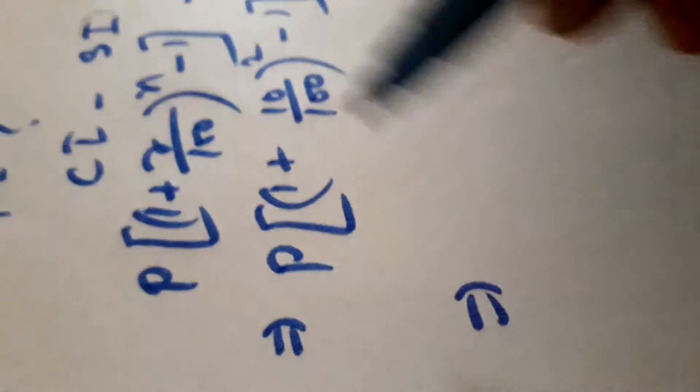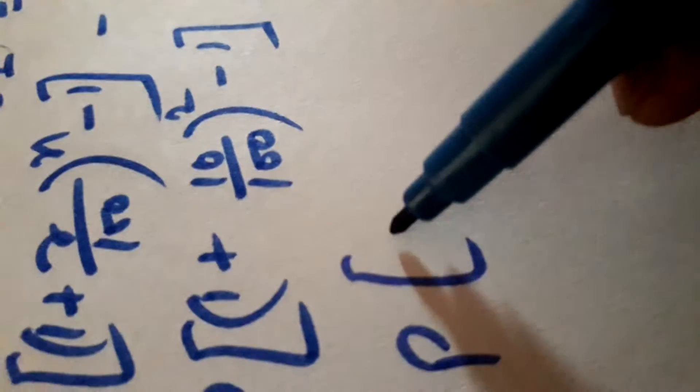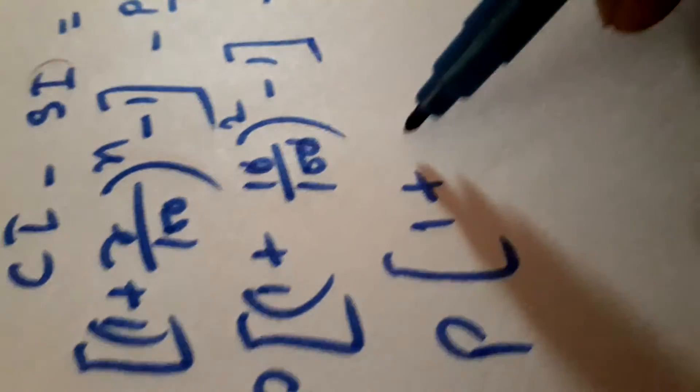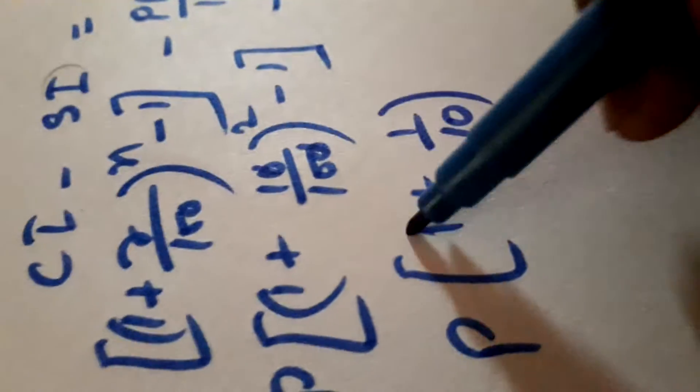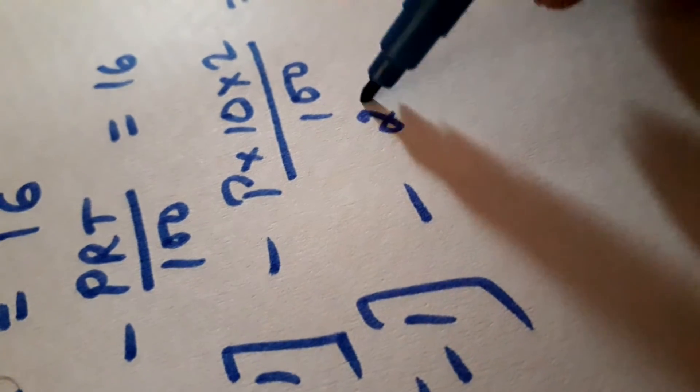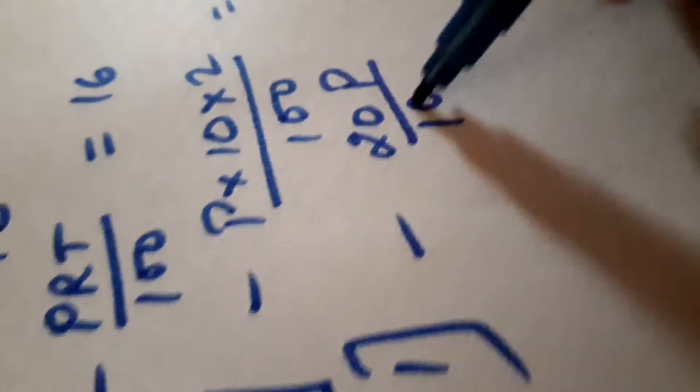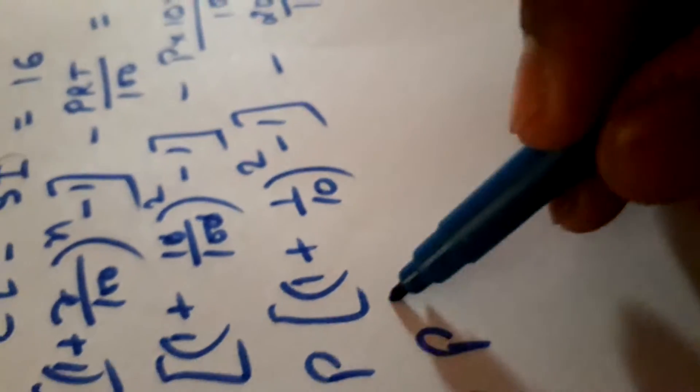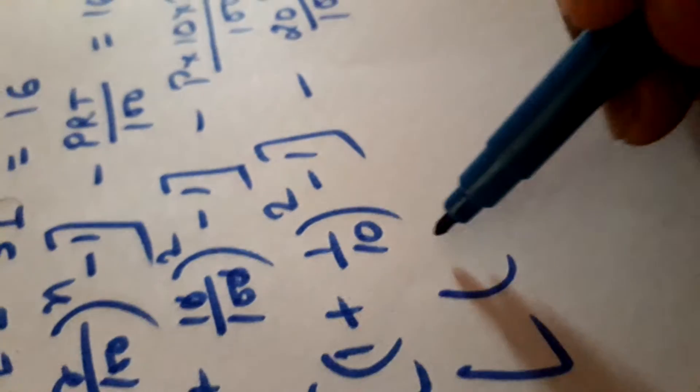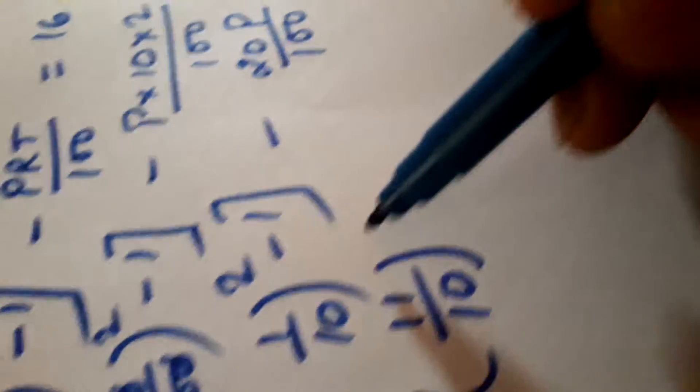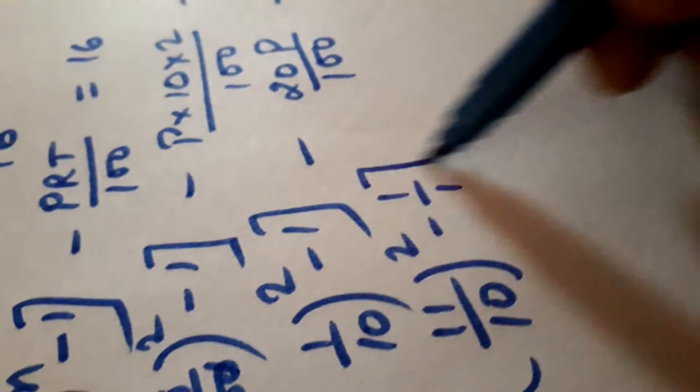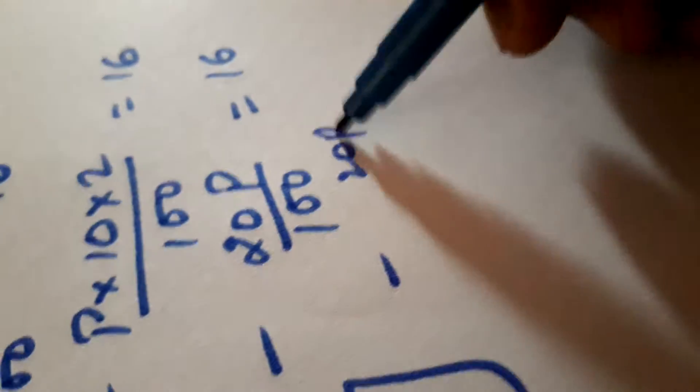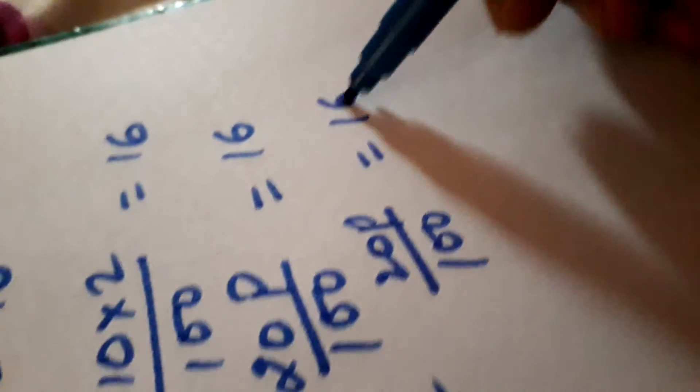Now we will solve this. P(1 plus 0.0 cancel, 1 upon 10) minus 1. It becomes 20P upon 100 is equal to 16. When we take the LCM, it becomes 11 upon 10 whole square minus 1, 20P upon 100 is equal to 16.